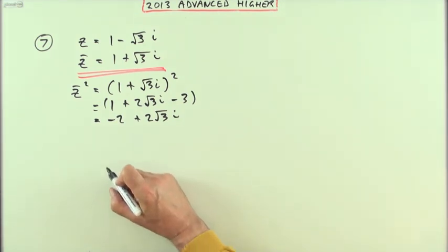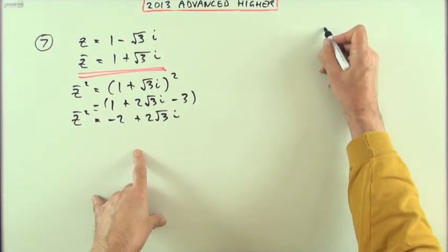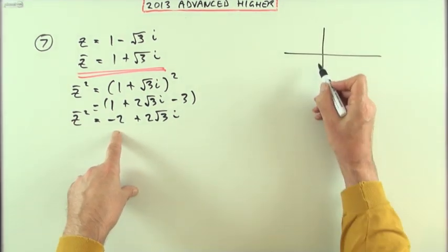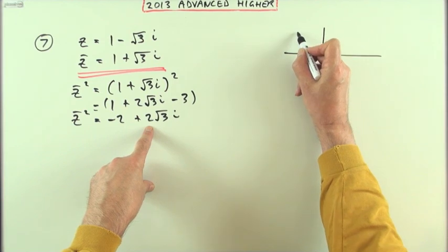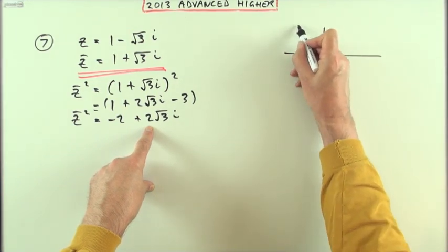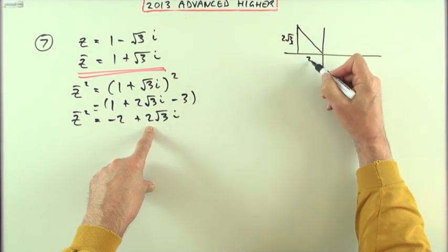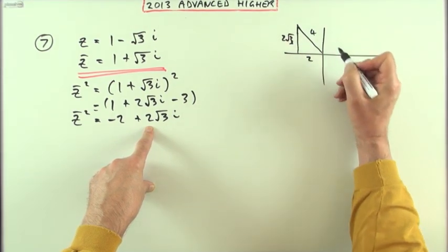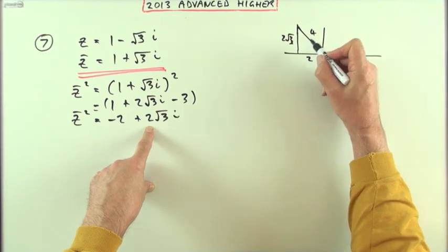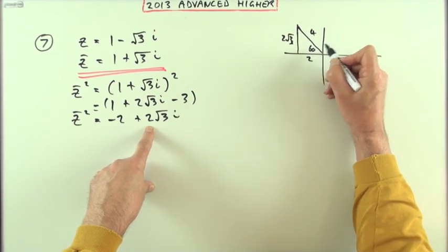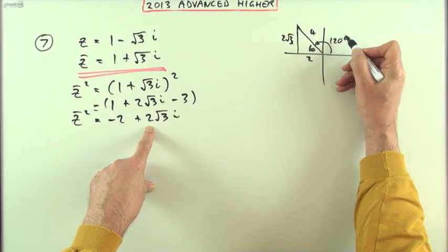And then, well, on a diagram that would represent two back and two root three up. Two back, two root three - and since that's double a one-two-root-three, that would have to be a four. And since it's a one-two-root-three triangle, that's going to be 60° in there, making the angle 120°.